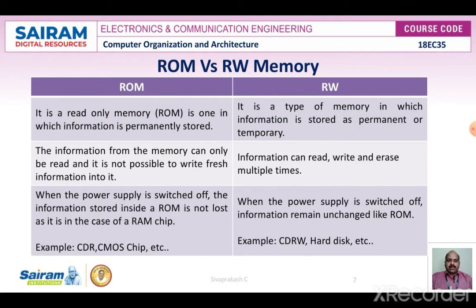Read-only memory versus read-write memory: read-only memory is one in which information is permanently stored, whereas read-write memory or random access memory may store information permanently or temporarily based on battery backup connected to that memory. In ROM, information can only be read — it is not possible to write fresh information into it. Read-write memory, on the other hand, can be read as well as written or erased multiple times.